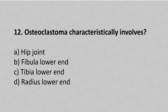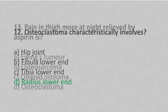Now let's move to question number 12. Osteoclastoma characteristically involves — option A: hip joint, option B: fibular lower end, option C: tibia lower end, option D: radius lower end. The answer is option D: radius lower end.